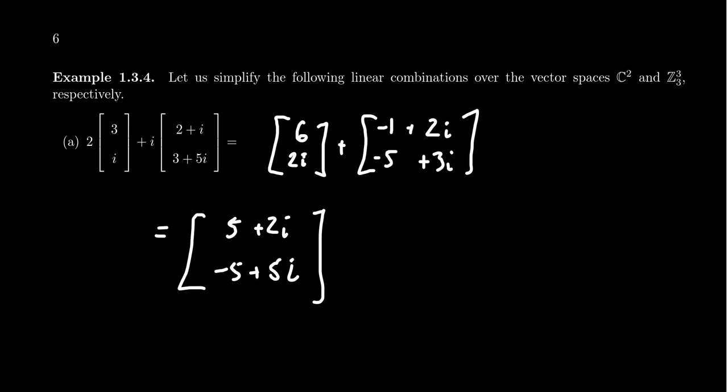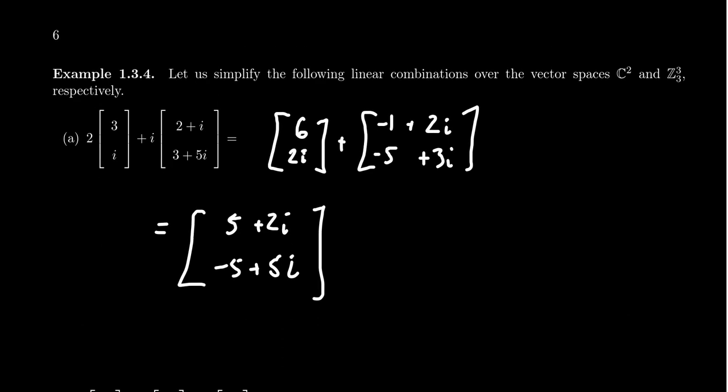Then, as another example, this one here I forgot to mention. This is going to be a linear combination over the vector space Z3^3. What that means here is, remember, you might want to rewrite this thing a little bit. This is going to be Z3 cubed. So what this right here means you're working mod 3. So our integers will reduce mod 3. All numbers should be either 0, 1, or 2.